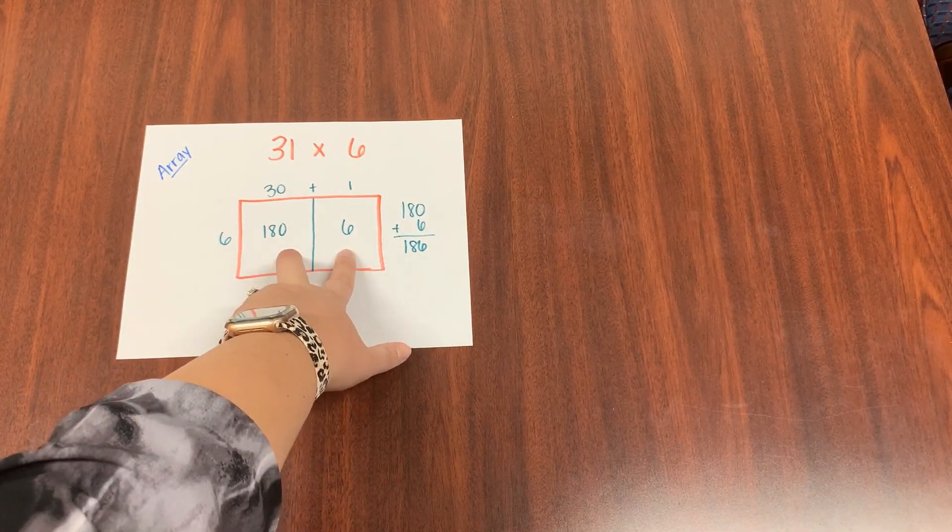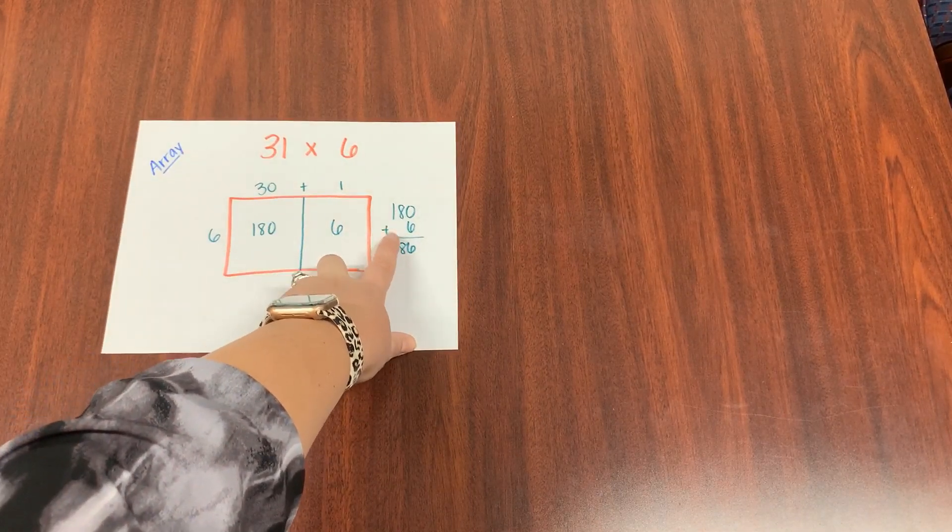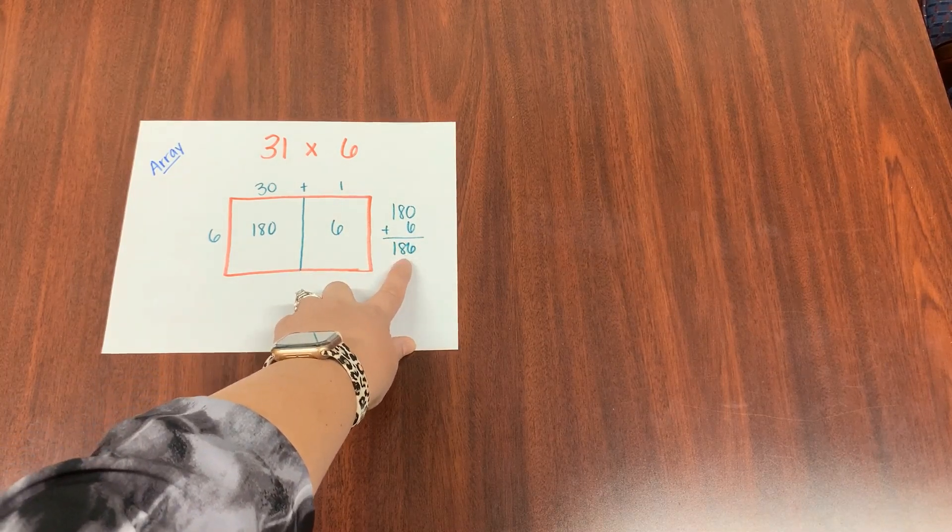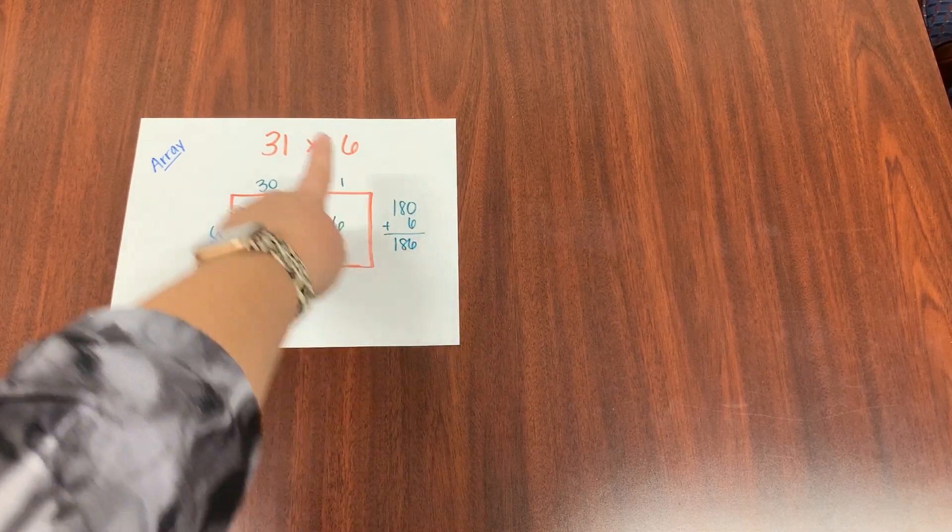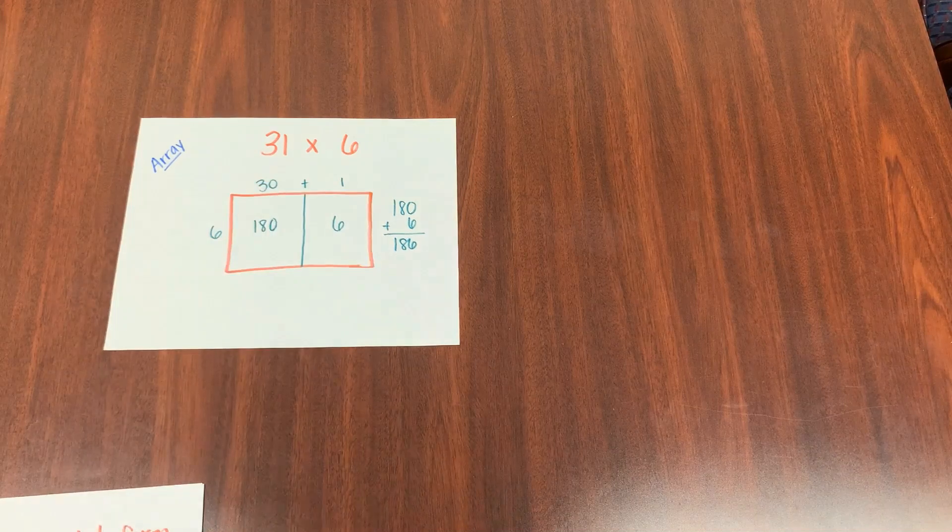When you add the inside of those boxes together, 180 plus 6, you get a sum of 186. Actually it's your product, so your answer to multiplying those two factors.